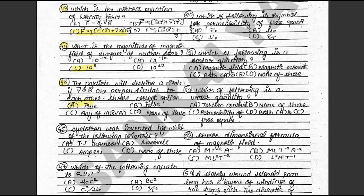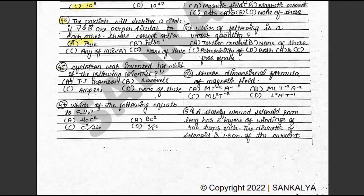Question 45: The particle will describe a circle if V and B are perpendicular to each other. Choose the correct option. The answer is A: True. This is on textbook page 138. Question 46: The cyclotron was invented by which of the following scientists? The answer is D. This is on textbook page 140.